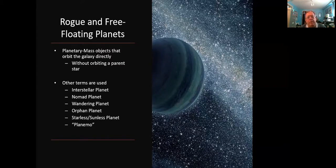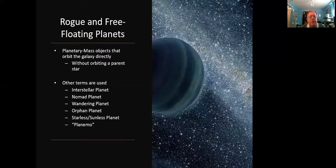Now people have come up with different terms for these rogue or free floating planets that orbit the galaxy on their own without an accompanying parent star. Other terms used: interstellar planet, nomad planet, wandering planets. I hate that one because planet means wanderer in Greek, so it's a wandering wanderer.